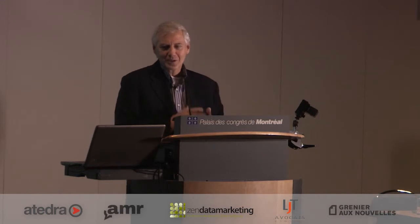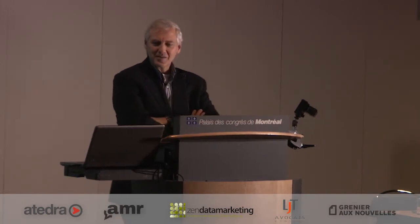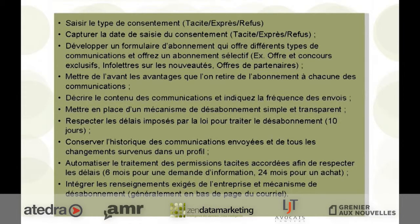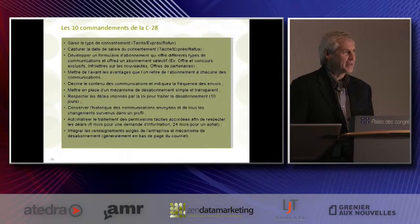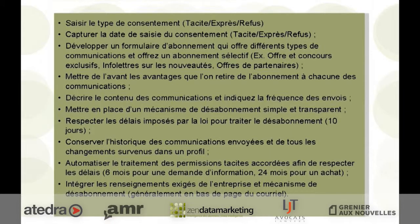Les 10 commandements de la loi, juste pour essayer de récapituler. Premièrement : saisir le type de consentement — tacite, express ou refus. Deuxièmement : capturer la date de saisie du consentement. Troisièmement : développer un formulaire d'abonnement qui offre différents types de communication et un abonnement sélectif. Quatrièmement : mettre de l'avant les avantages que l'on retire à s'abonner à chacune des communications. Cinquièmement : décrire le contenu si on veut que les gens s'abonnent, et indiquer la fréquence. Sixièmement : mettre en place un mécanisme de désabonnement simple et transparent — des fois on clique pour se désabonner et on n'est jamais désabonné, donc il faut que ce soit simple, transparent, avec une réponse dans les 10 jours. Septièmement : respecter les délais imposés par la loi dans le traitement des désabonnements.